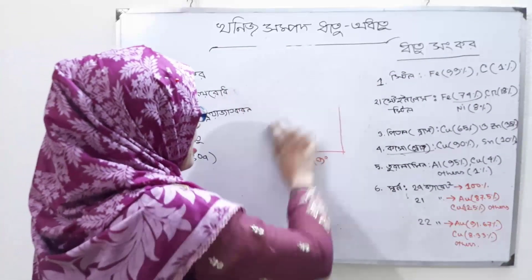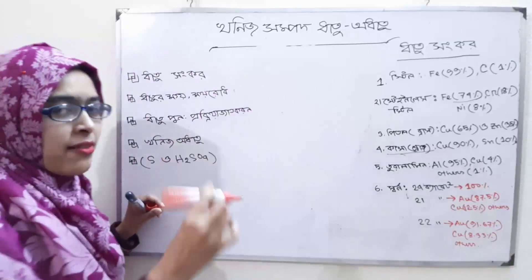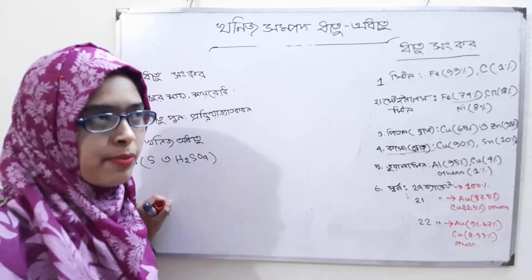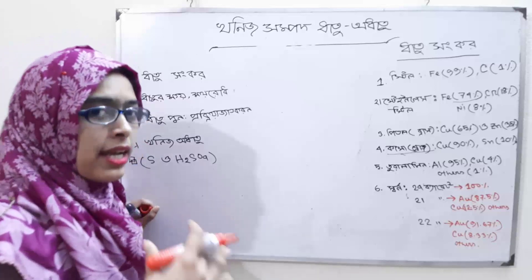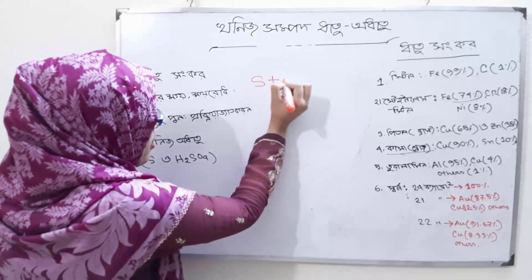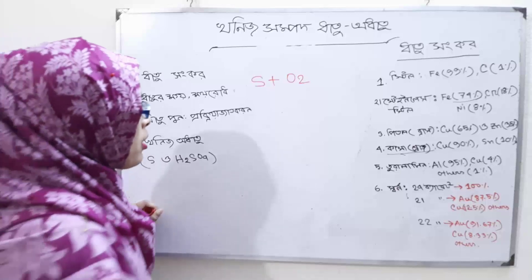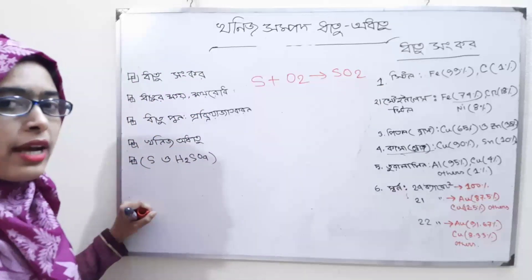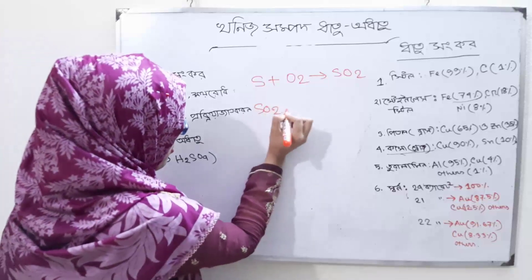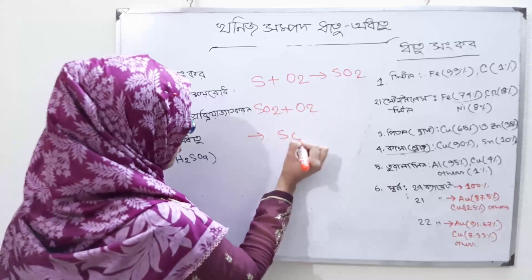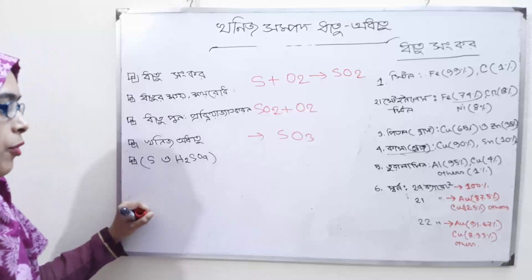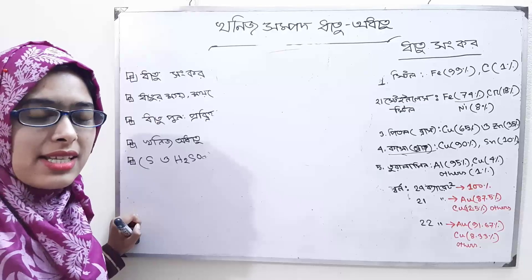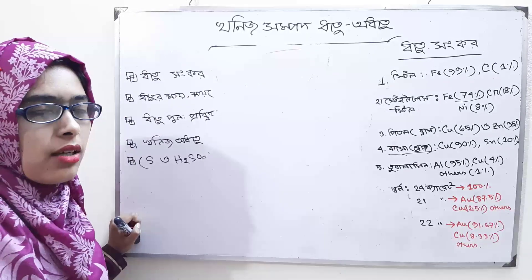Sulfuric acid is used to be sulfur dioxide, and sulfur dioxide is used to be sulfur dioxide. The dioxide is the same as the dioxide — how is the dioxide done, so what will happen? The dioxide does not work, so what will happen? This sulfur dioxide is called sulfur dioxide.